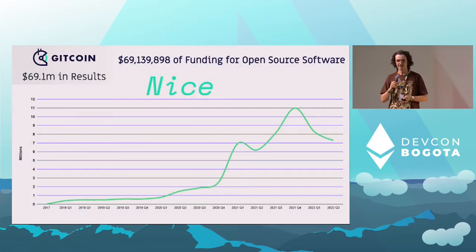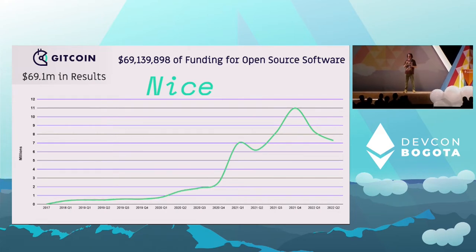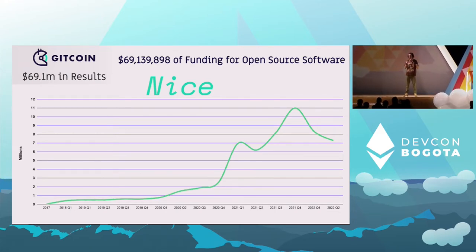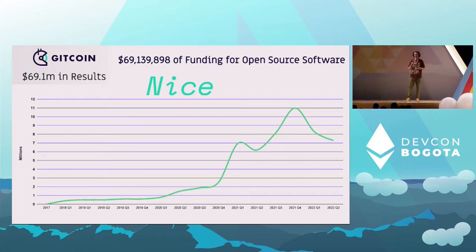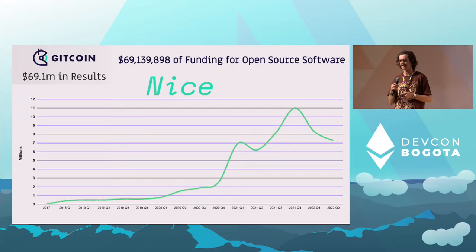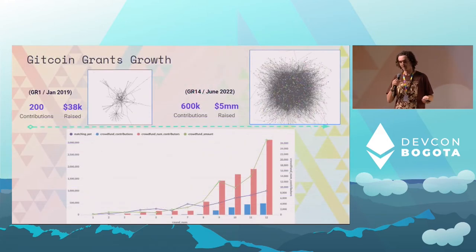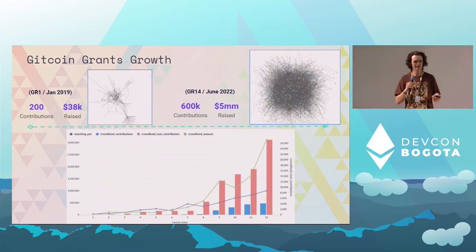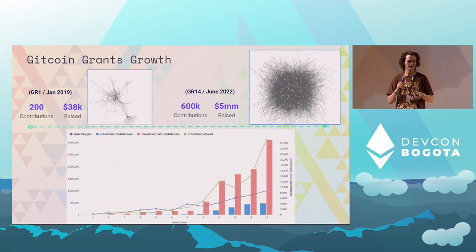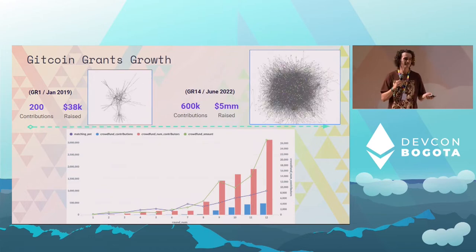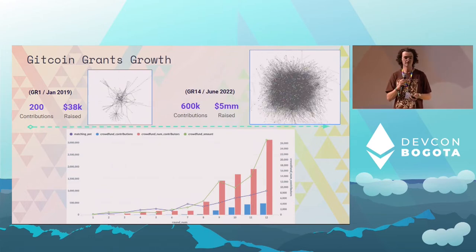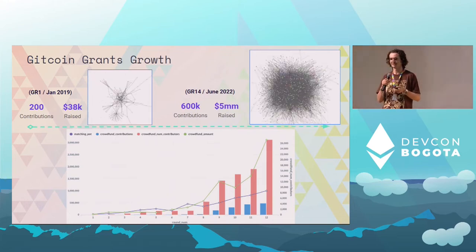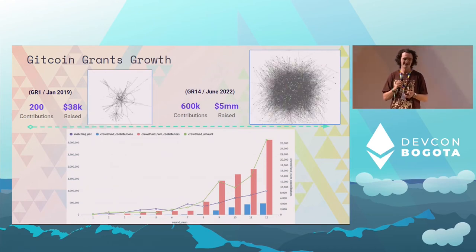Where are we today? Gitcoin, since we started in 2017, has funded $69 million worth of open source software and public goods — a pretty nice number. This includes grants, bounties, hackathons, tips, and a bunch of different things on the Gitcoin platform. For the Gitcoin grants program, we've seen round-over-round growth for over three years. We started in 2019 with a $25,000 matching pool. Fast forward to Grants Round 14 in June: $600,000 in contributions and over $5 million raised for these public goods and open source projects.